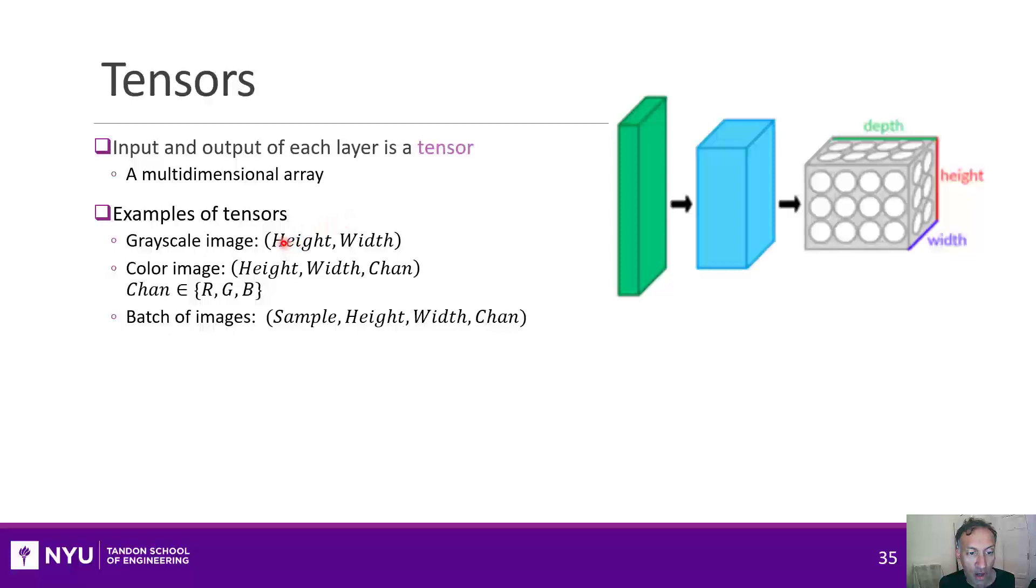But if you took a color image, there's actually a matrix for each color channel. So it would be height, width, by channel, and there are three of these channels. One for red, one for green, and one for blue. So this would be a three-dimensional tensor.